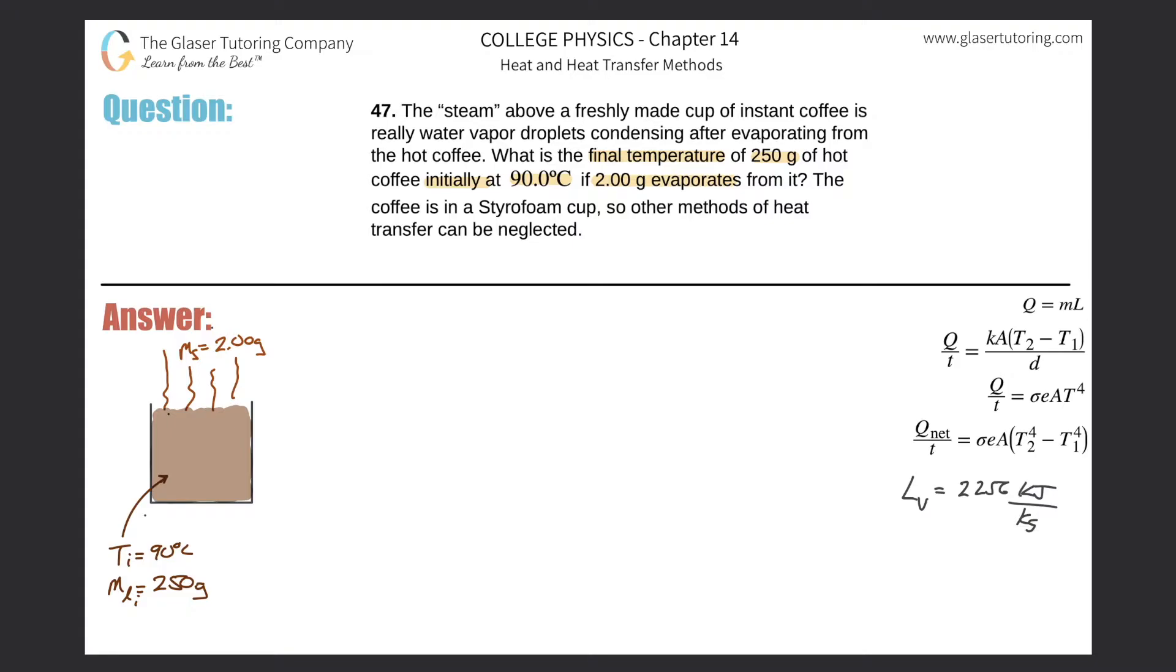We can create a formula: the heat initially present in this container of coffee minus the heat that was needed to evaporate this amount of steam should equal the heat that is finally in that amount of coffee. If I reorganize this, I can bring this term over to the right hand side: negative Qe equals Qf minus Qi.